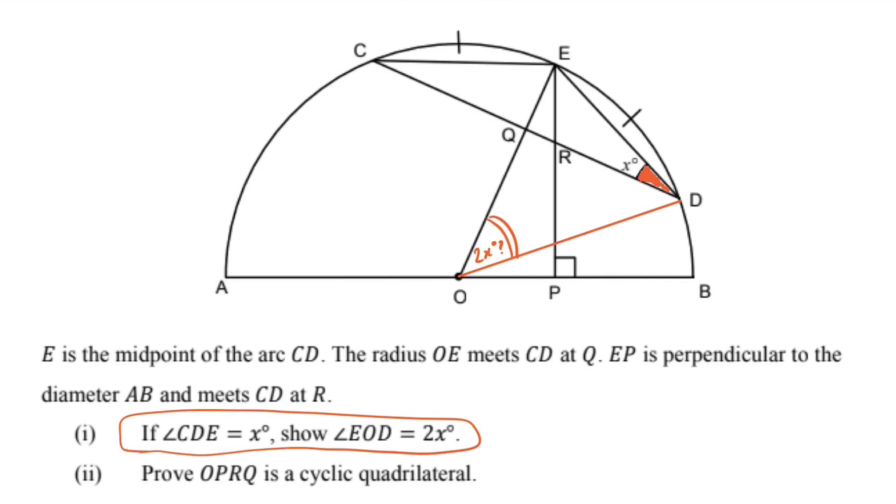is that the angle at the center is double the angle at the circumference standing on the same arc. Now this is a really good sign for me, because the angle I'm interested in, angle EOD, it is an angle at the center. So that's a good thing, that's a tick,